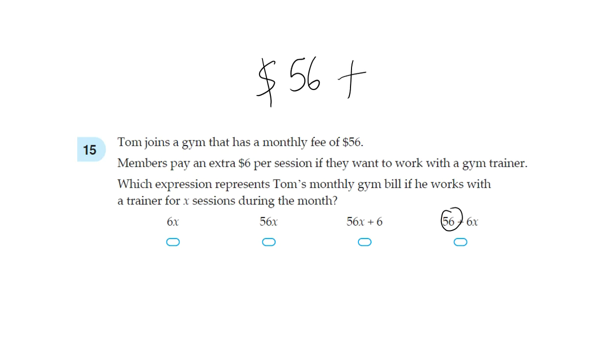Then we have $6 per session and there are X number of sessions. So 6 times X. So we can just write this as 6X. So that's your answer.